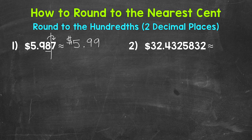Let's move on to number 2, where we have $32 and then a fairly long decimal. Let's round this to the nearest cent — that's the hundredths place. We have a 3 in the hundredths place. Take a look to the right in the thousandths: we have a 2. Is that 4 or less, or 5 or more? 2 is 4 or less, so we stay the same. This rounds to $32.43.